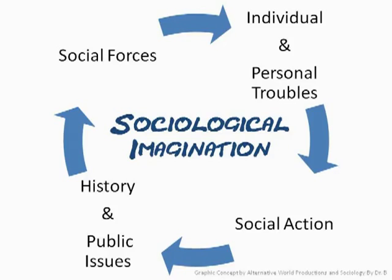I've got a little slide here showing individuals and personal troubles on one side, and history and public issues on the other, with sociological imagination in between. These public issues drive social forces that create personal troubles. And then these personal troubles and individual problems can drive us to produce social action — we do things, and those produce history. People write history, and then we generate public issues. There's this cycle. History and public issues drive personal troubles, and that is the crux of the sociological imagination.